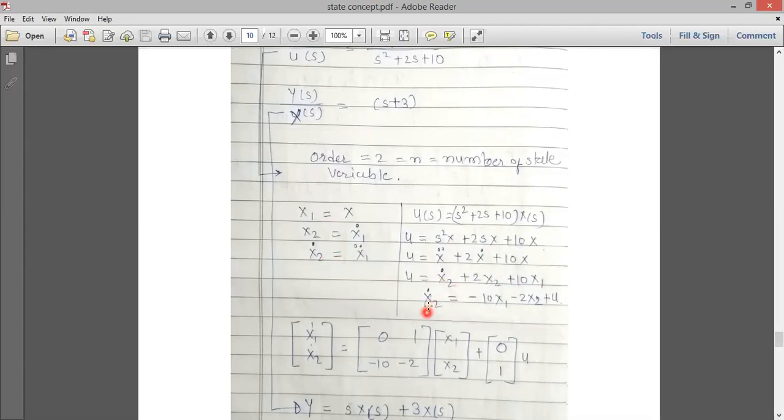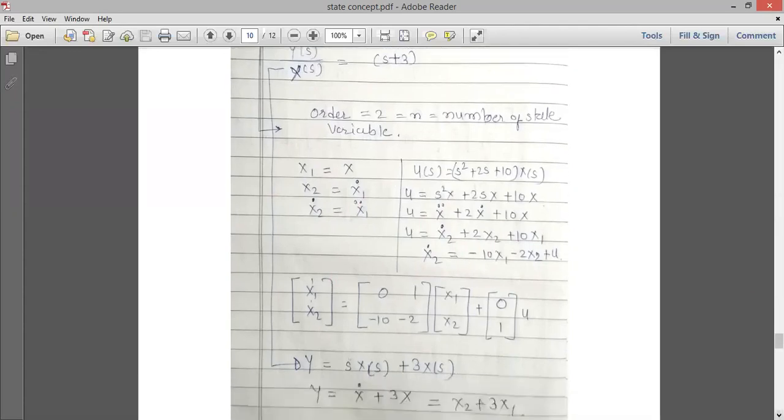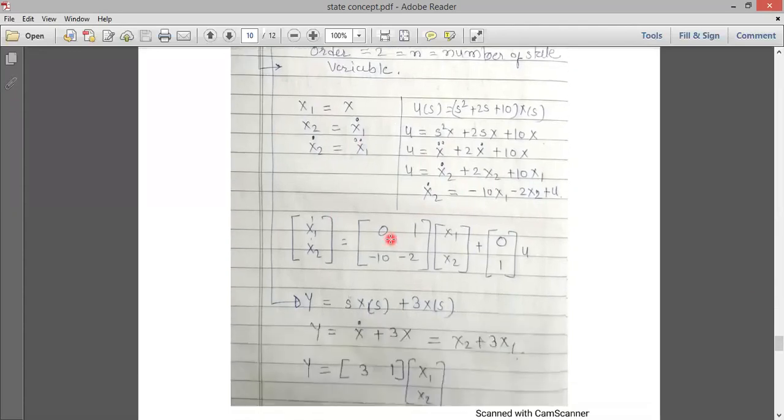Now arrange the terms x2_dot. And we know for the representation we require the x1_dot and x2_dot. So x1_dot is equal to [0 1; -10 -2] times [x1; x2]. And for x1 we don't have any u, so it will be 0. For x2_dot we have the u, so it will be 1.